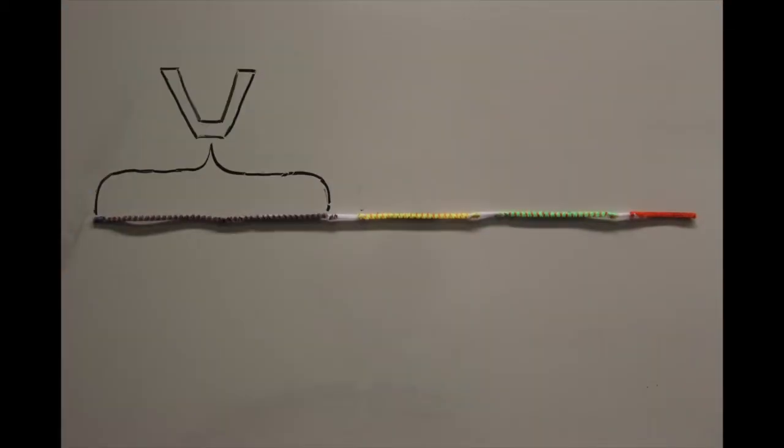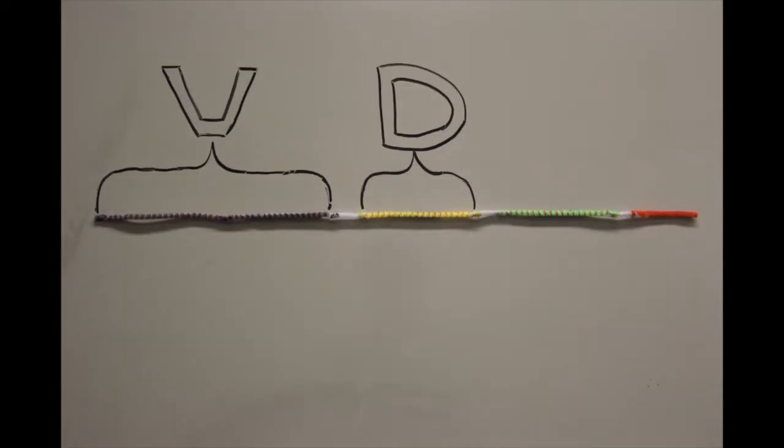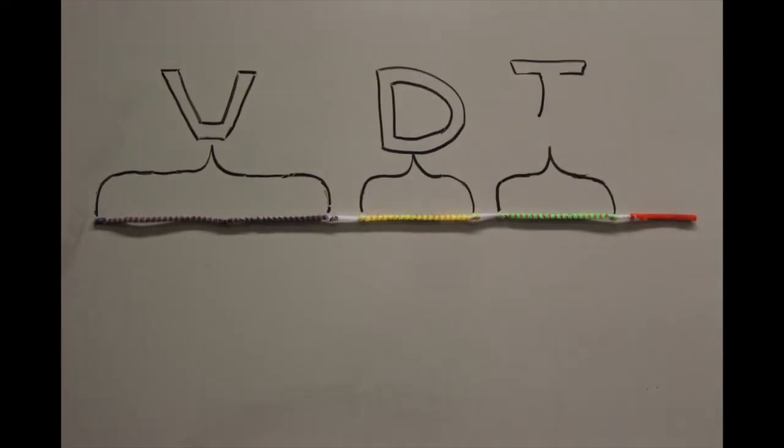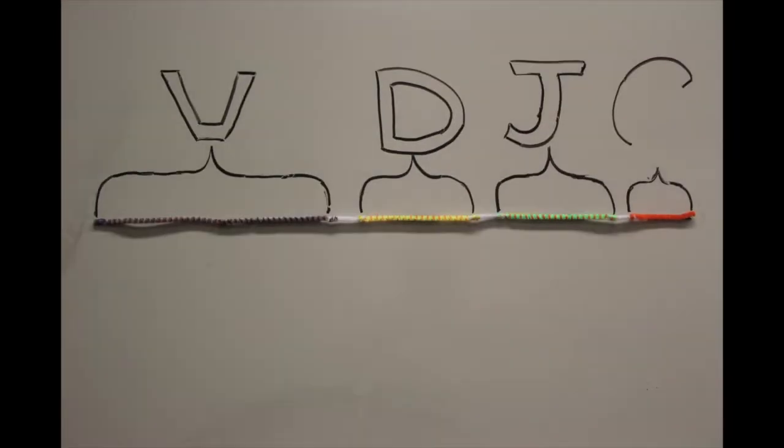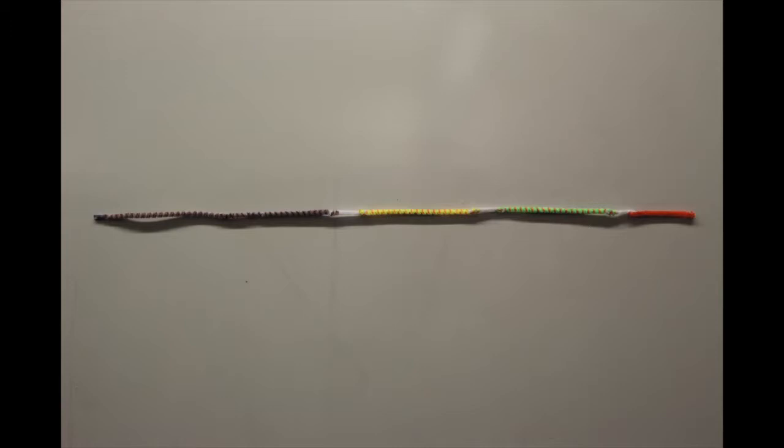The V-region consists of 51 different B-segments. Additionally, the D-region consists of 27 different segments and the J-region consists of 6. The C-region, however, is constant and only consists of one.